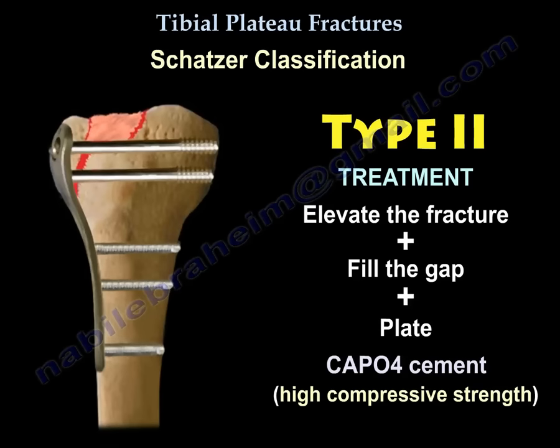Calcium phosphate has a high compressive strength and shows the least amount of articular subsidence on follow-up examinations. It is better than autograft, especially at 12 months as it relates to subsidence, shows better x-rays, and allows the patient to have earlier weight bearing. Note that calcium phosphate is not tricalcium phosphate — tricalcium phosphate has less compressive strength.